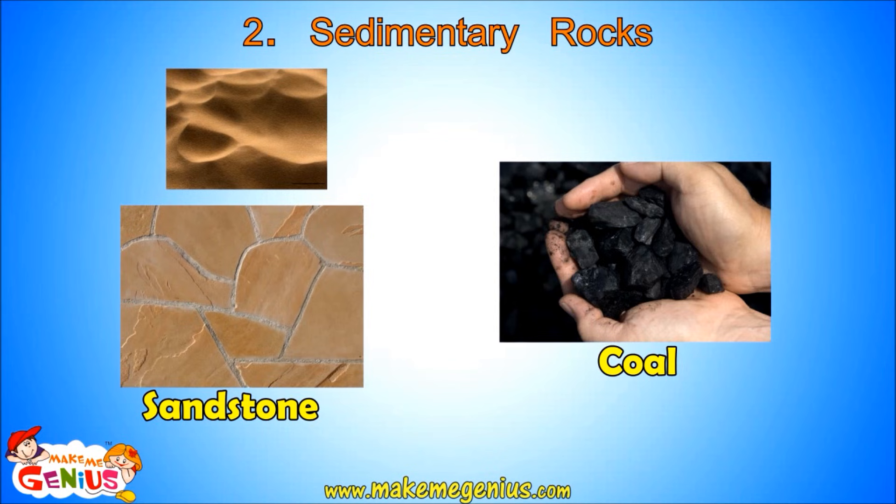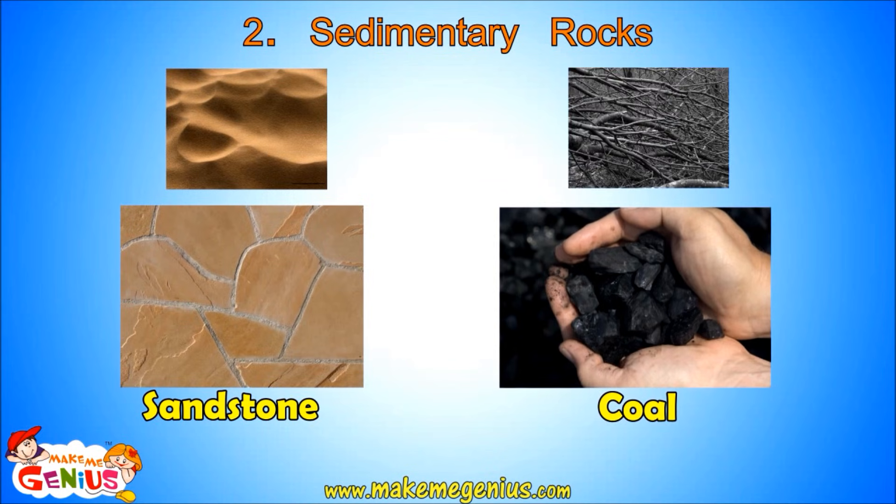For example, limestone is formed by the compression of skeletons and shells of marine animals in the sea. Sandstone is formed by the compression of sand. Coal is also a sedimentary rock — it is formed by the compression of dead trees and plants, which are also called fossils.